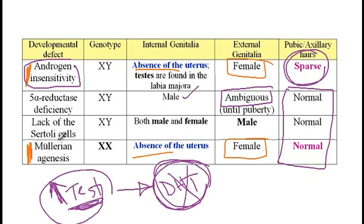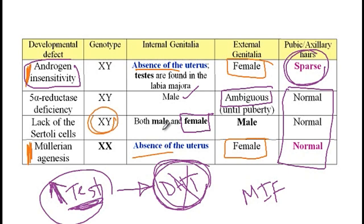Finally, in the lack of Sertoli cells: Sertoli cells are required to produce Müllerian inhibiting factor to inhibit development of the Müllerian ducts. So in these individuals, female internal genitalia would be present. Since they are XY with normal testosterone production, male internal genitalia will also be present. DHT production is also normal because there is no problem with 5-alpha reductase, so external genitalia will have male characteristics. That concludes our discussion.